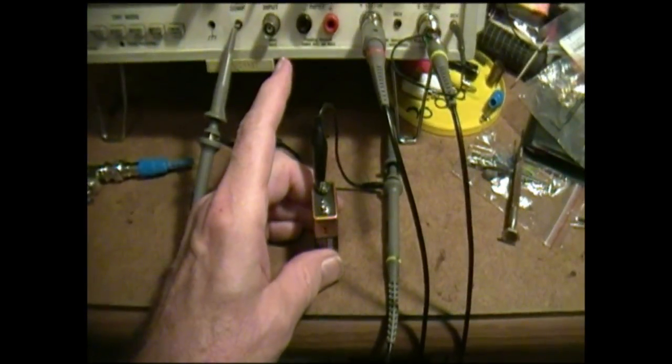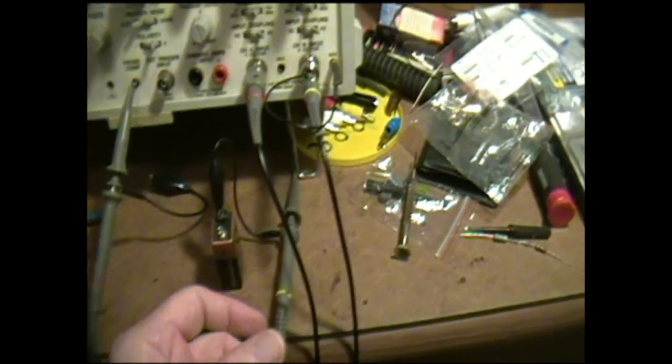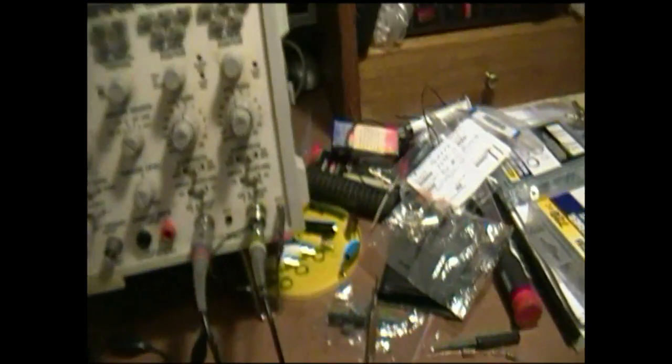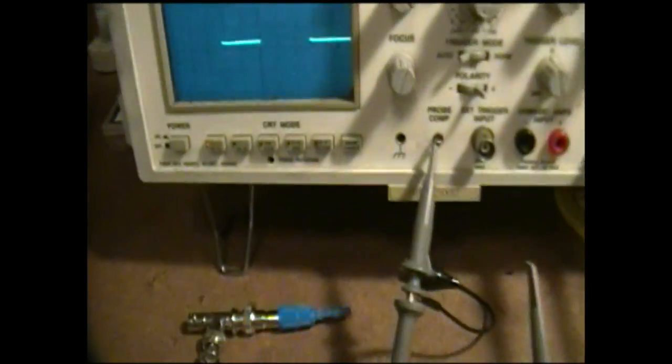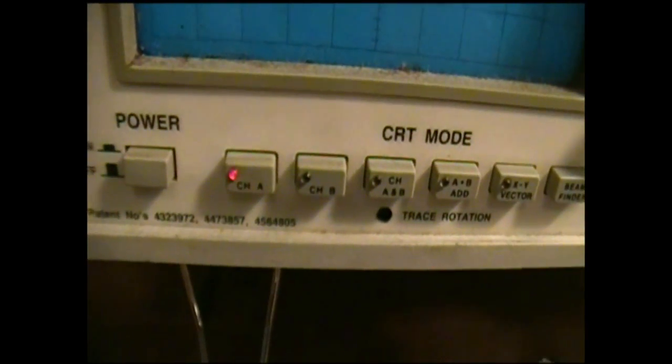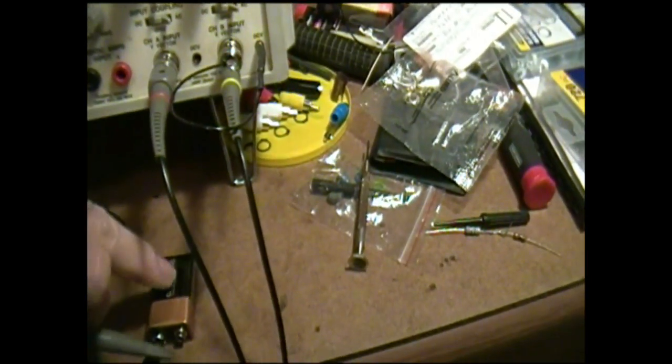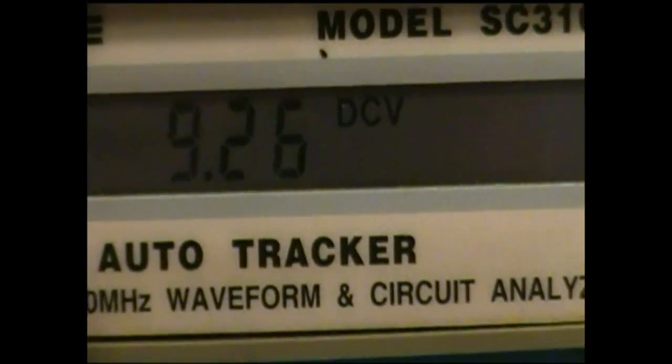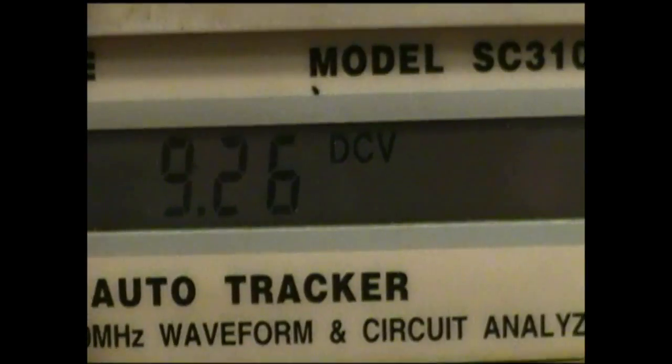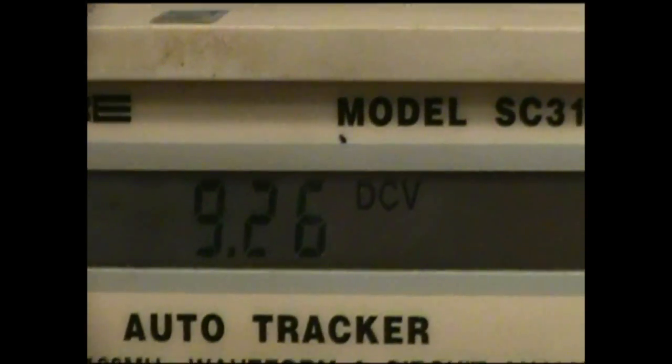I got out a fairly fresh 9 volt battery here and I've got the unit set up to read DC volts on channel B. By the way, you can read the DC voltage or the frequency of that signal without displaying it. Right now I have the scope set up so that it's only displaying channel A, but I'm just going to be using the scope to measure the voltage of this 9 volt battery. It reads 9.26 DC volts, which is very very close to what I read on other meters.